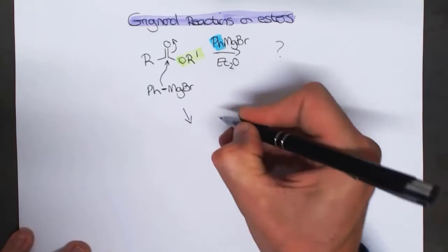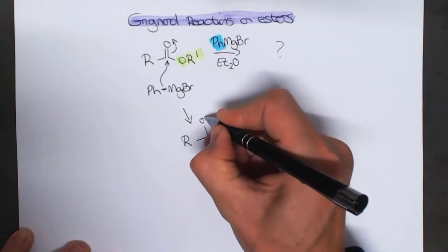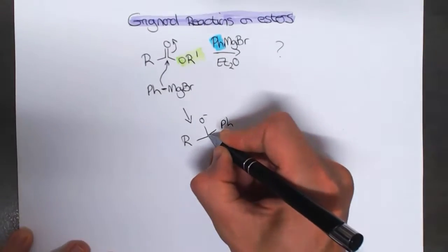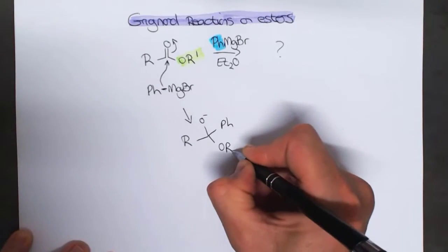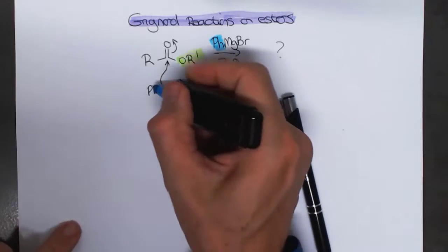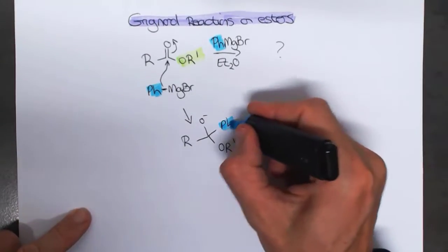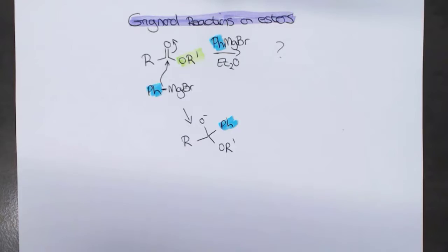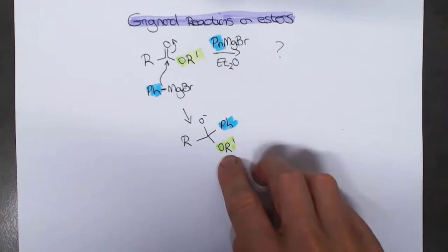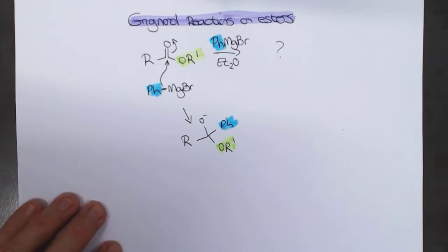When that addition happens we get an intermediate with an O-minus. We've added our phenyl as the nucleophile, and we're left with this O-R' group — the ester portion. So we've got our phenyl nucleophile and we've got this O-R, which is the ester. This could have been an ethyl ester, for instance, but some ester group.